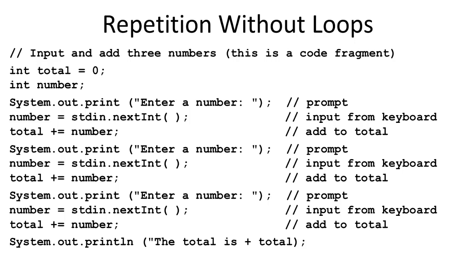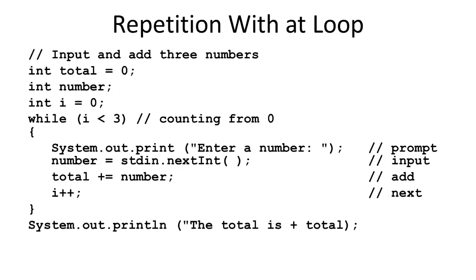Writing a program this way is OK as long as there are not too many numbers to add up. Just think of all the code that would need to be written to input and add 20 numbers or even 100. Another problem with coding this way is that the number of inputs may change, causing a major rewrite of the program.